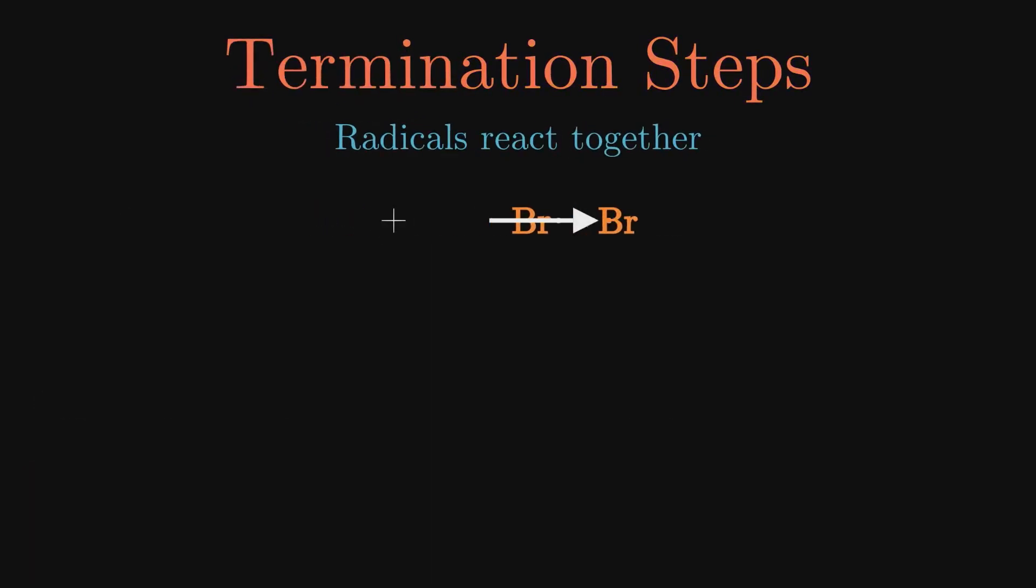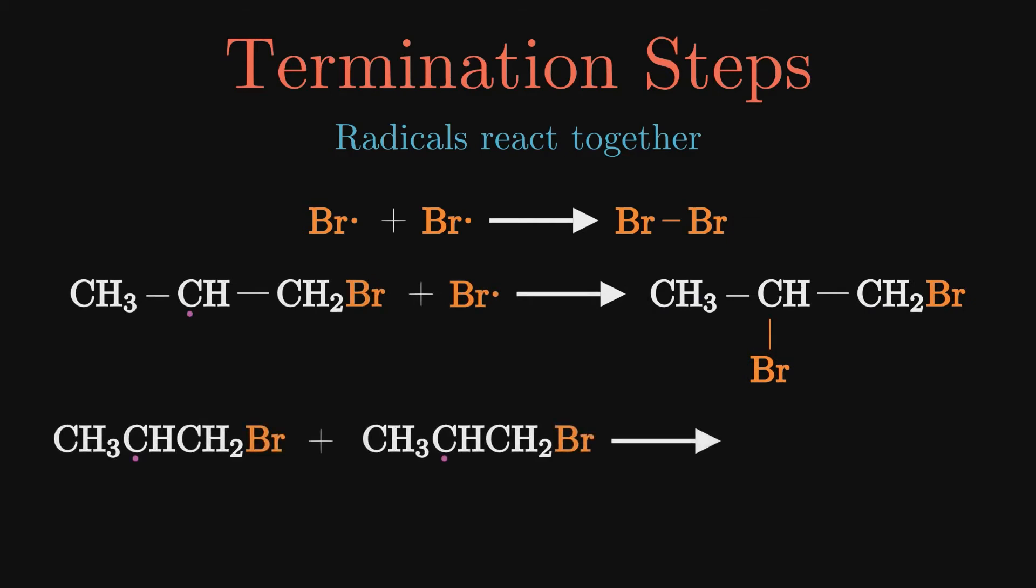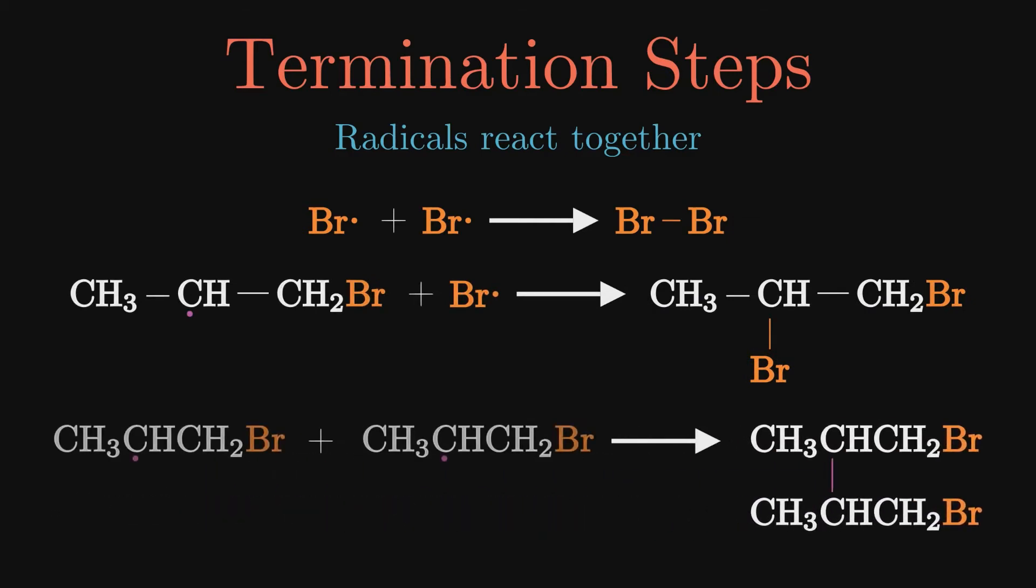Termination steps involve the reaction of two radicals. The first one involves bromine radicals forming bromine molecules. The second involves an alkyl bromide and bromine radical reacting to form 1,2-dibromopropane. The third is two alkyl bromide radicals producing 1,4-dibromo-2,3-dimethylbutane.